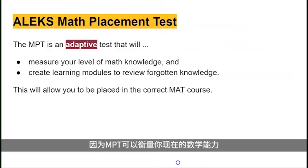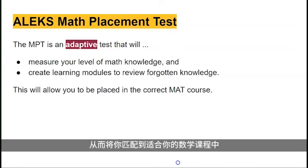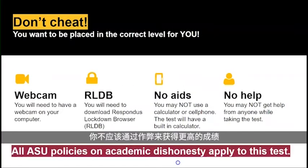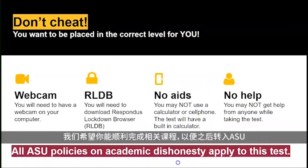Because the MPT is an adaptive test, it will measure your current level of math knowledge. It will also create learning modules for you to review any forgotten knowledge. By doing this, you will be placed in the correct math course for your level. It's important that you not try to cheat for a better score. This will cause problems because you'll be placed in a math class that's too high for you and may cause you to fail. We want you to do well in your classes so that you can move on to ASU full-time.